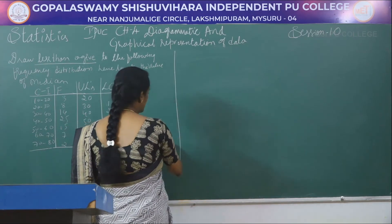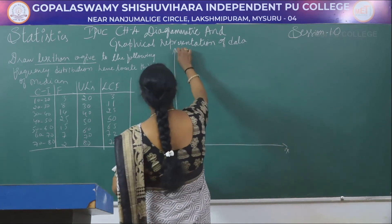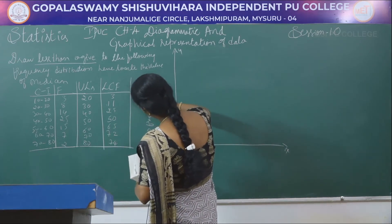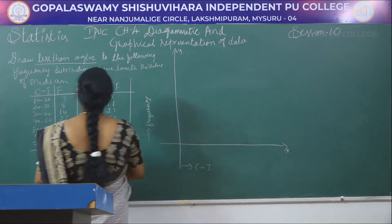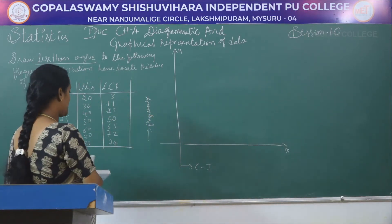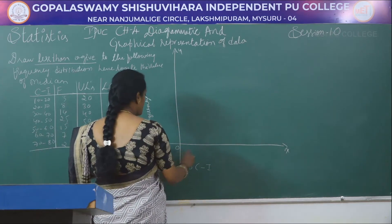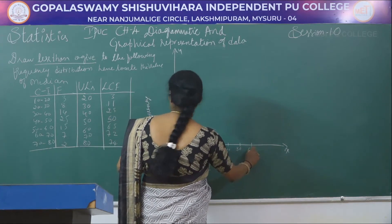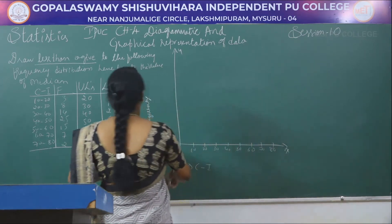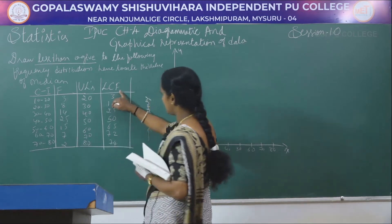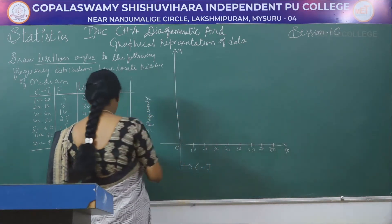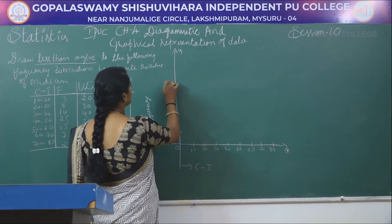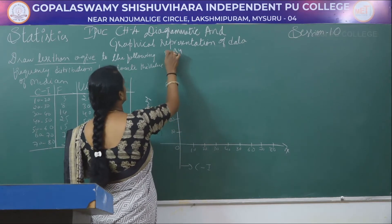Next, we draw the graph with x-axis and y-axis. On the x-axis we take the class intervals starting from 0: 10, 20, 30, 40, 50, 60, 70, 80. On the y-axis we take the LCF values. Since the lowest LCF is 3 and highest is 74, I will mark: 10, 20, 30, 40, 50, 60, 70, 80.